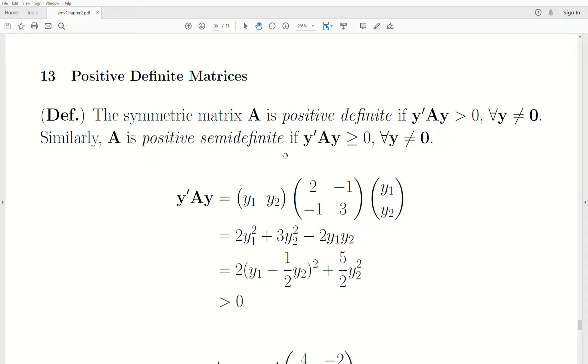Similarly, if A is positive semi-definite, you allow it could be 0. So y^T*A*y is greater than or equal to 0, and again, for any y not equal to 0.